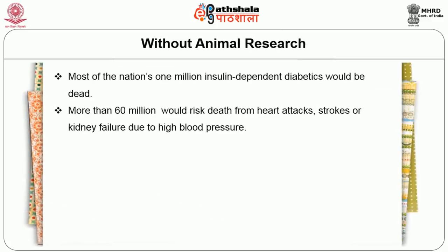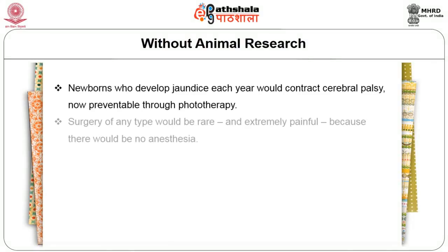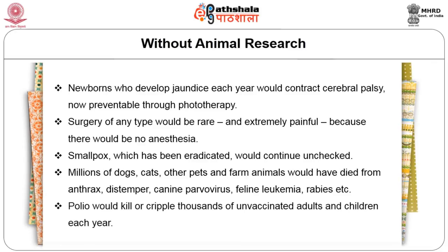Most of the nation's one million insulin-dependent diabetics would have died if insulin was not discovered and used. More than 60 million would risk death from heart attack, stroke, kidney failure, or high blood pressure. Chemotherapy wouldn't have existed, and many children are now surviving blood cancers because of this treatment. People disabled by stroke or spinal cord injury are given rehabilitation. More than one million would be blind if treatment for cataract had not been found. Newborns who develop jaundice would contract cerebral palsy, but now it is preventable through phototherapy — also first tried through animal experimentation. All this could not have happened without pre-clinical testing before coming to human beings.